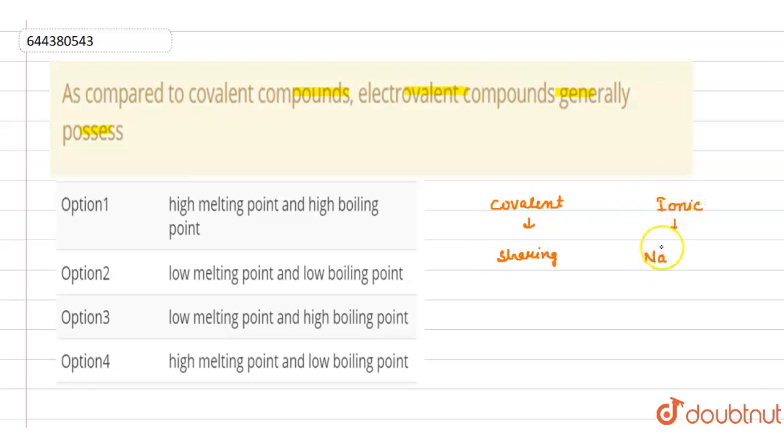one element donates electrons and another element gains electrons, like in case of NaCl, due to which ionic bonds are formed. And ionic bonds are generally stronger in nature.